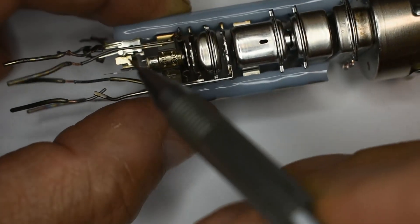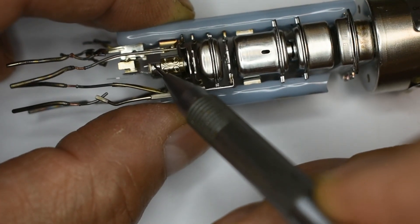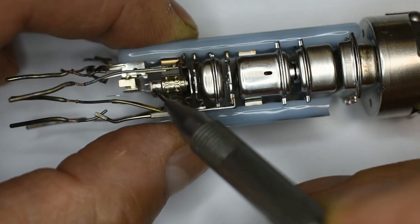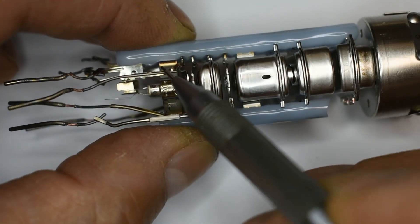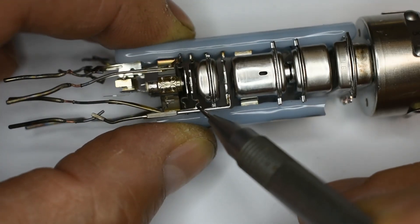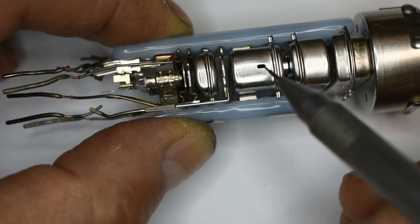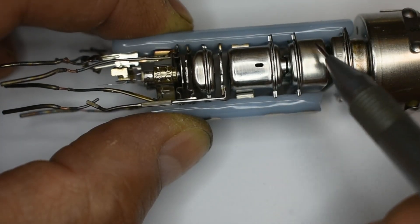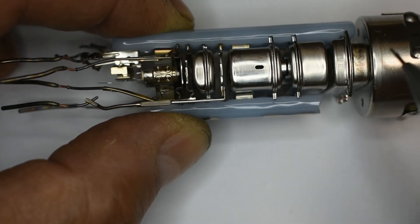So again, we have our heaters here, our cathode, and then our grid connection here and our first anode, which is also connected to this plate here. And this is our focus assembly and our final anode here.